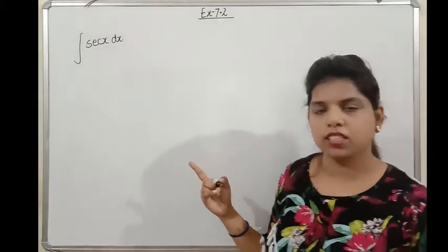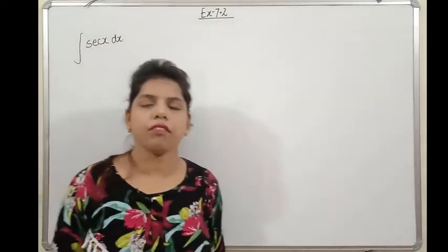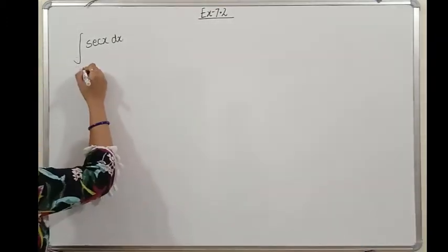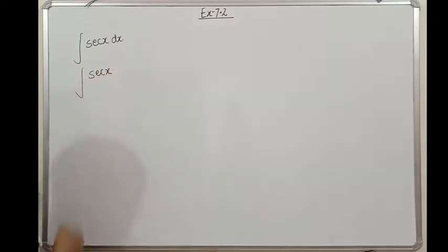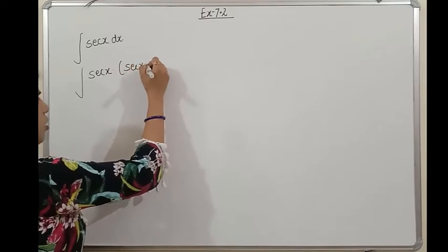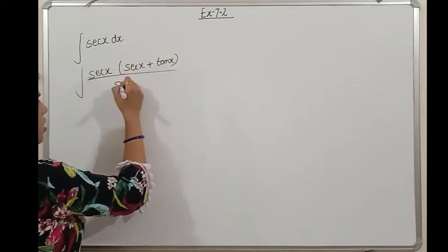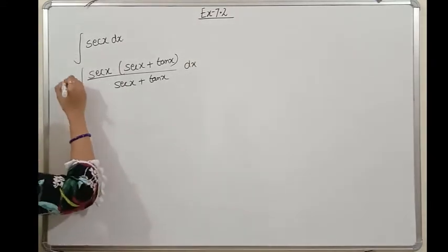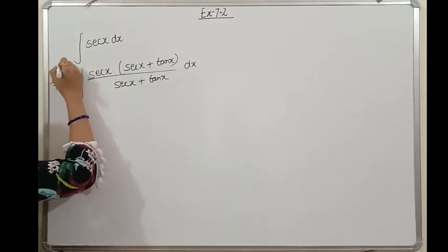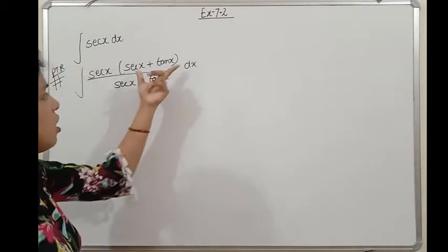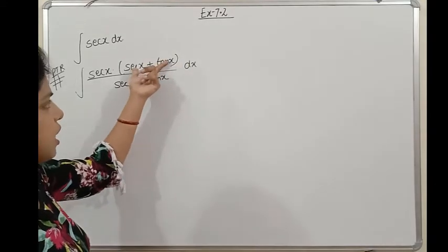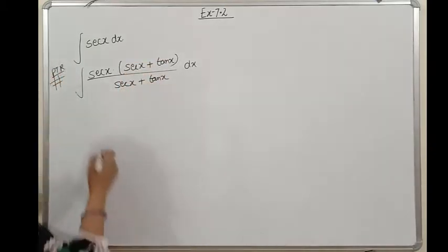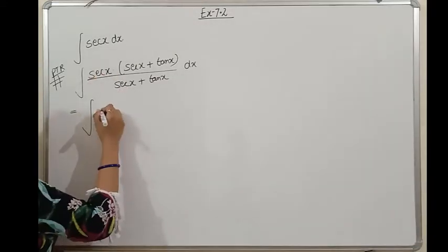Next is the integration of sec x. We could write sec x = 1/cos x, but that gives no benefit since we get neither a function nor its derivative. So we need a new trick: multiply and divide by (sec x + tan x). This is a point to remember. The reason: this converts the integral into the f'(x)/f(x) form.